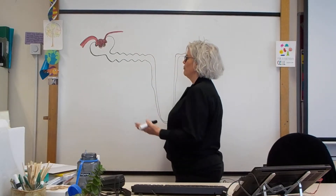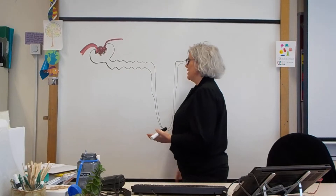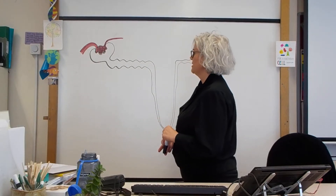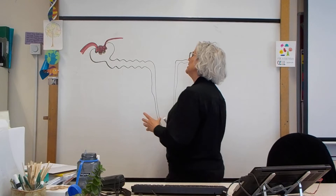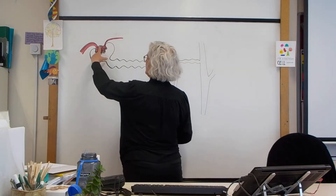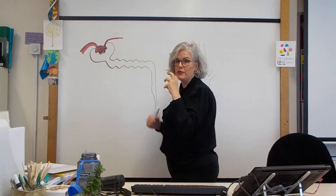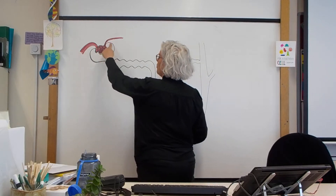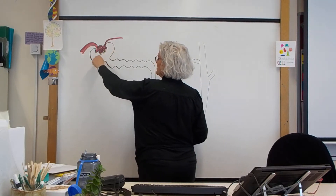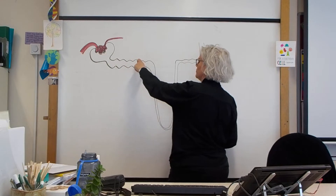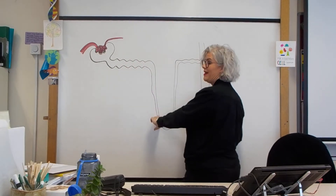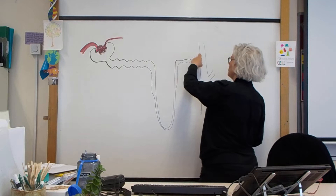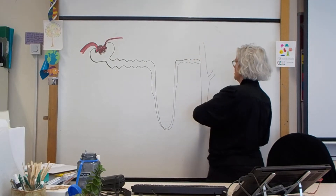Just to refresh your memory, this is a basic diagram of a kidney tubule. You've got your glomerulus, which is that knot of capillaries. You've got your Bowman's capsule, your proximal convoluted tubule, your loop of Henle, your distal convoluted tubule, and then your collecting duct.